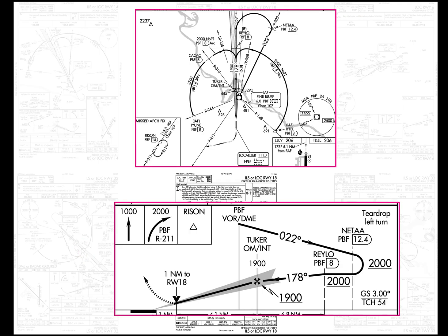At Pine Bluff, Arkansas, the teardrop goes outside the DME arc. All it says is 'teardrop left turn' — it doesn't say 'remain within' or anything. It just assumes you're going to do the lobe between Netta and the intercept efficiently.